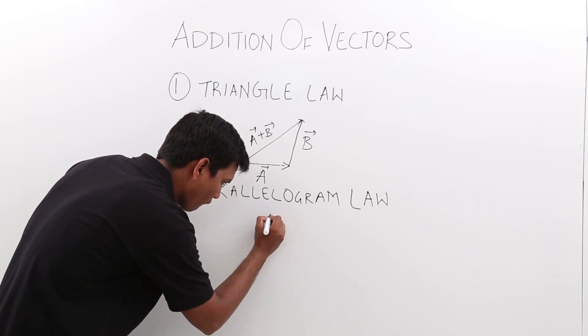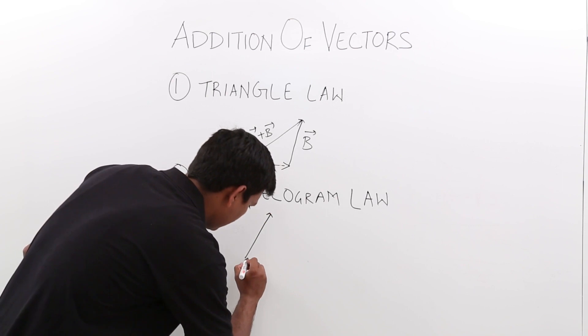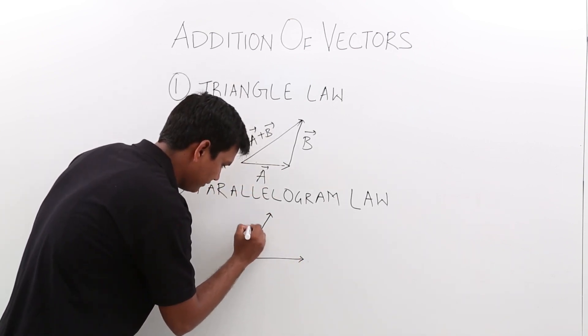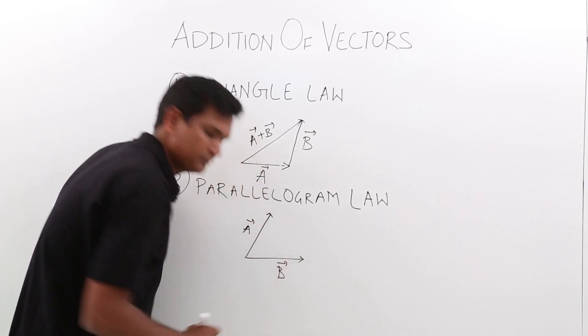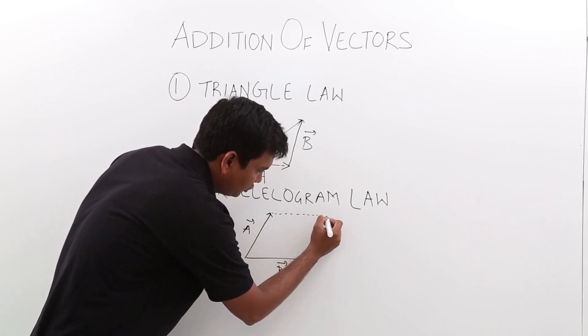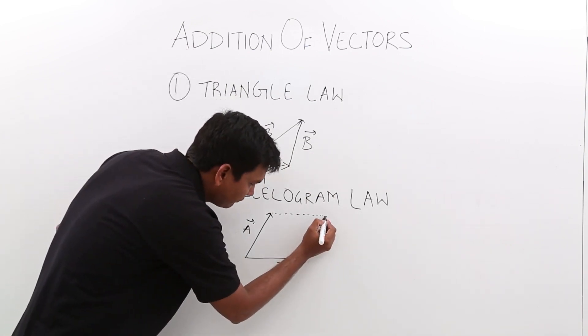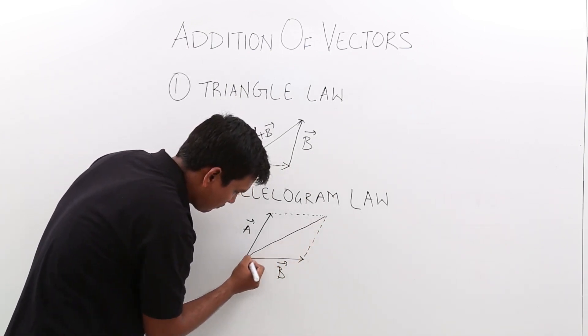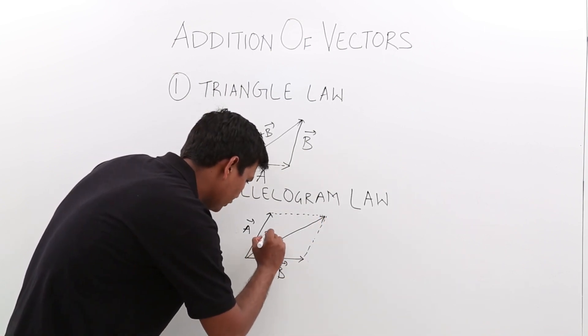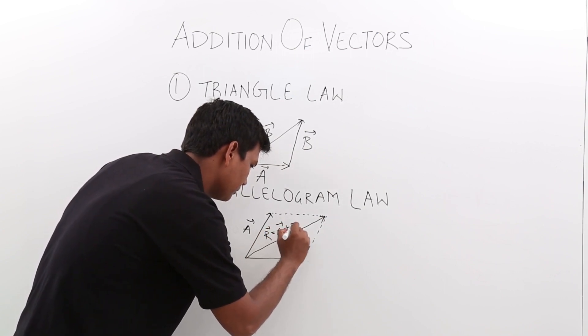Assume I have vector like this, another vector like this. Let us say it is an A vector, let us say it is a B vector. I will extend this to make a parallelogram. The diagonal or the resultant, I can say, would be given by A vector plus B vector.